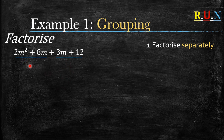Let's start with the first two terms. We look at the number part — the two and the eight. What is the highest common factor of two and eight? It is two, that's why we write the two here.